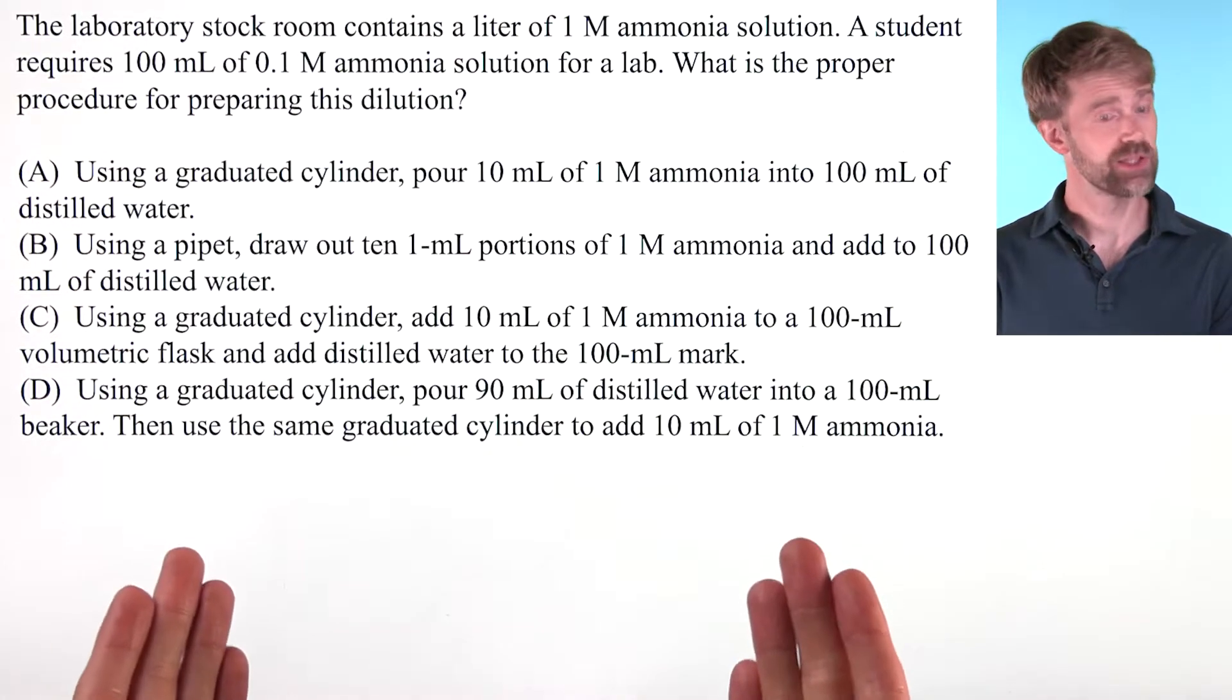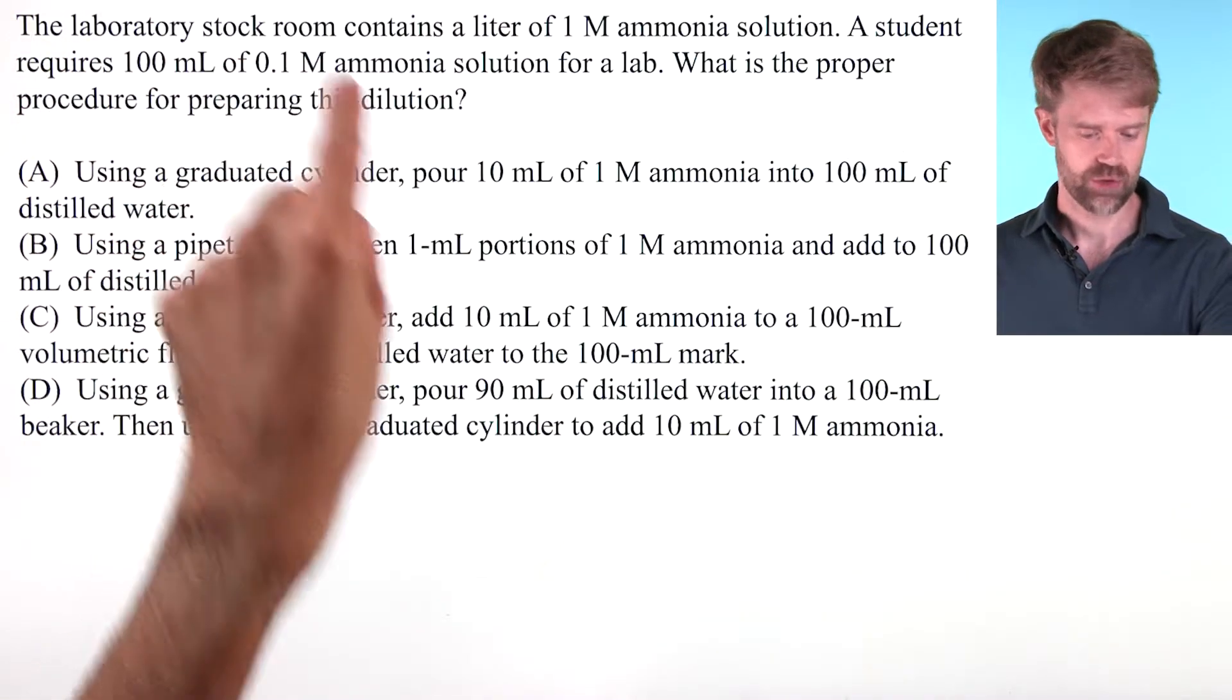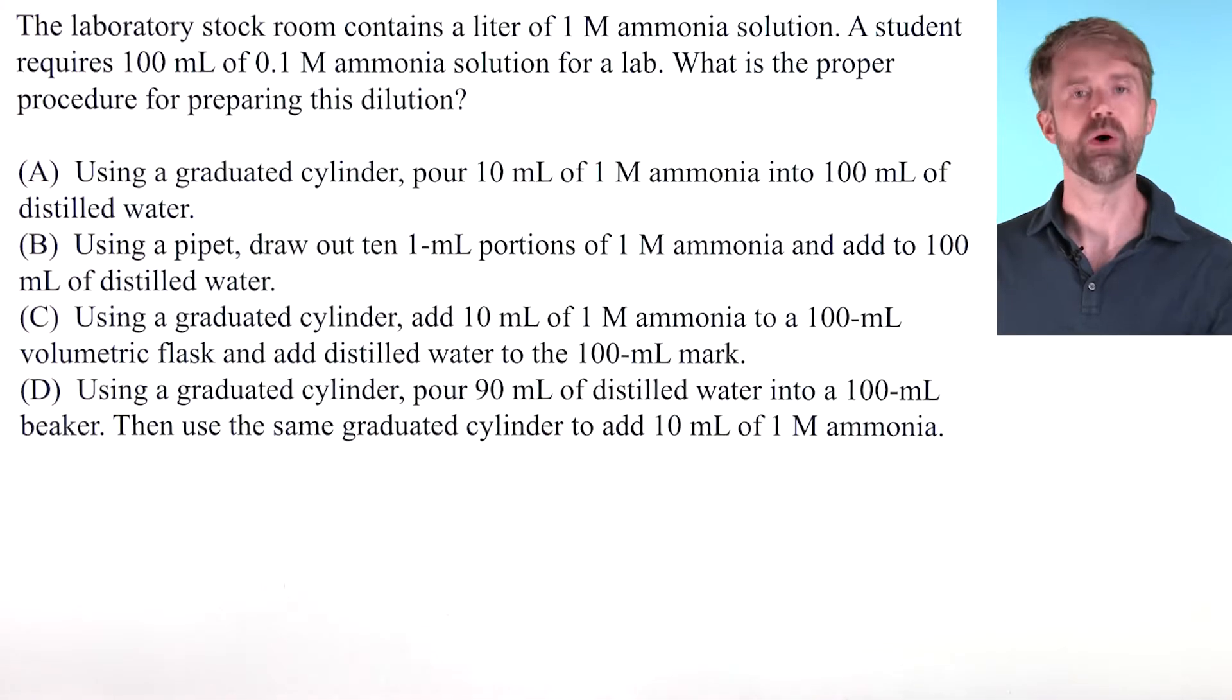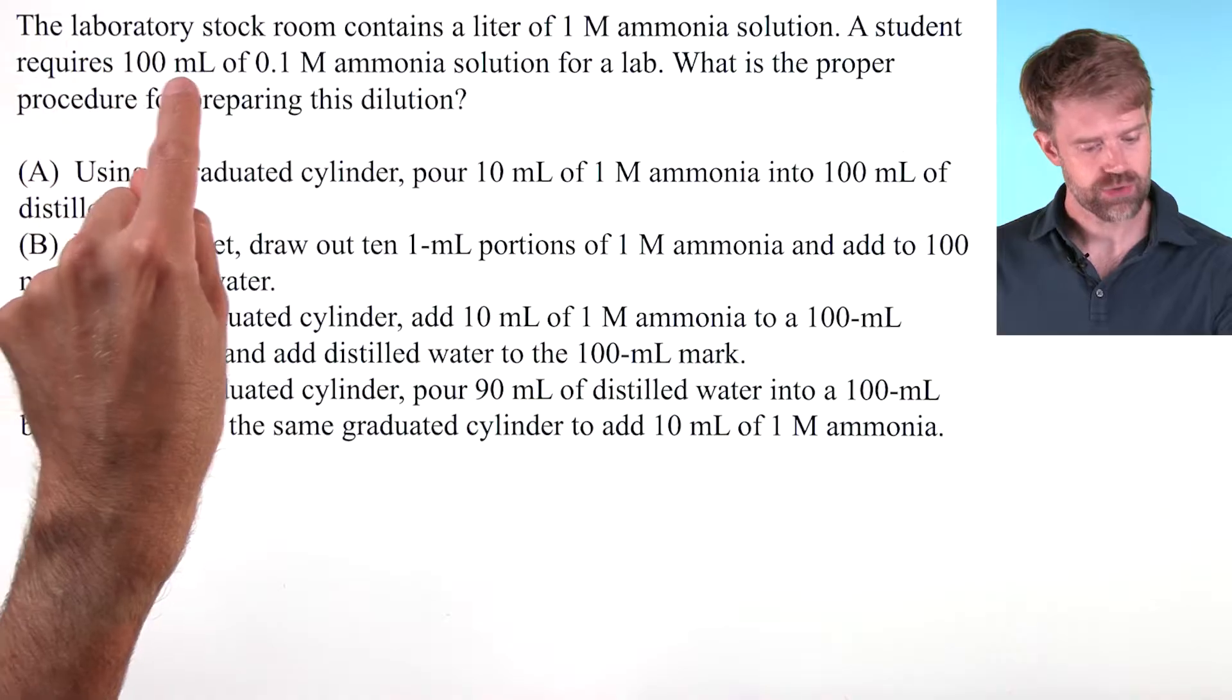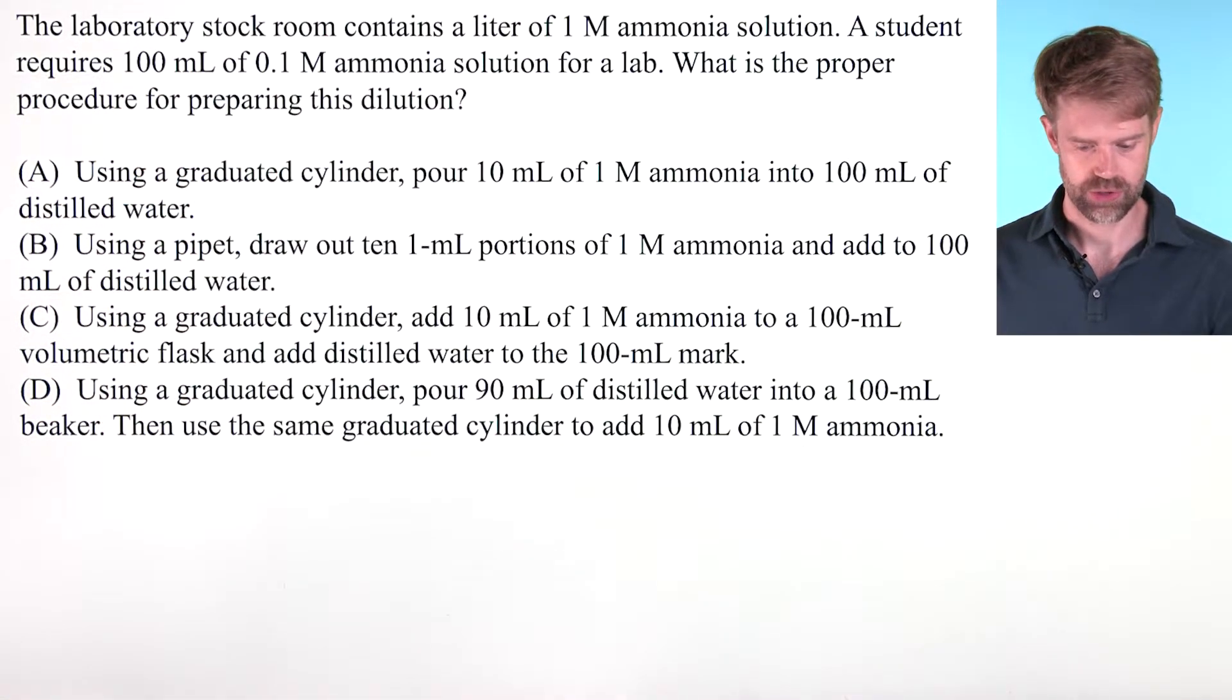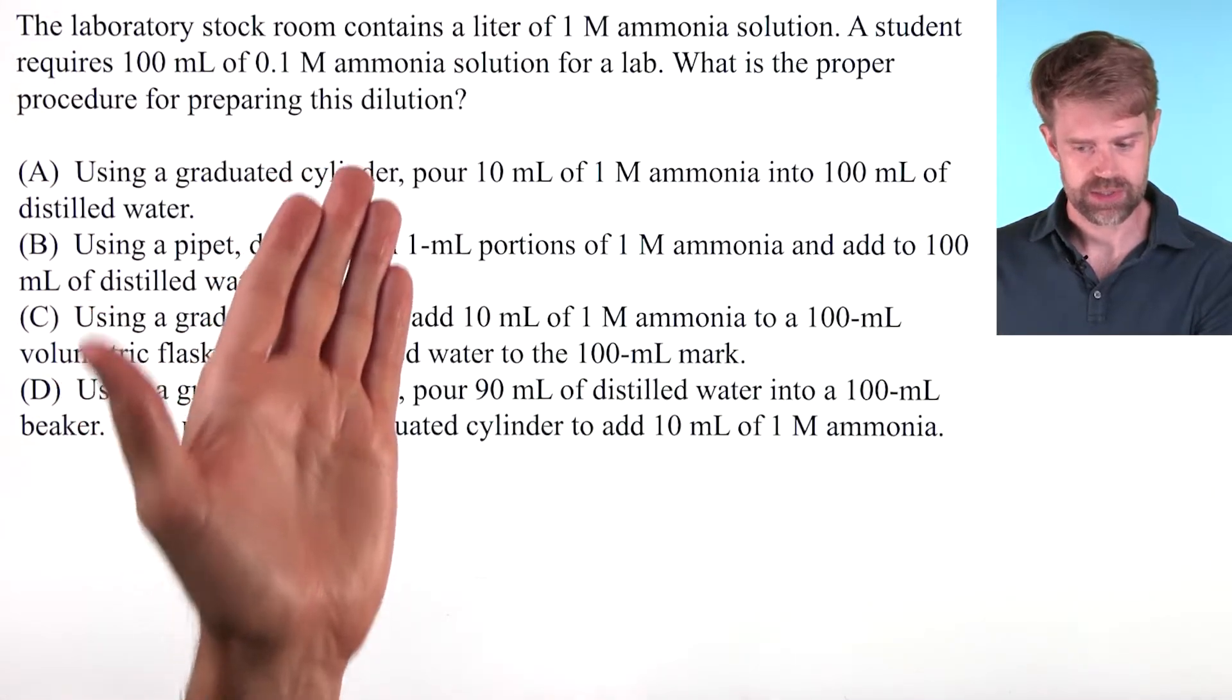Okay, this is a long one. The laboratory stock room contains a liter of 1 molar ammonia solution. A student requires 100 milliliters of 0.1 molar ammonia solution for a lab. What is the proper procedure for preparing this dilution?